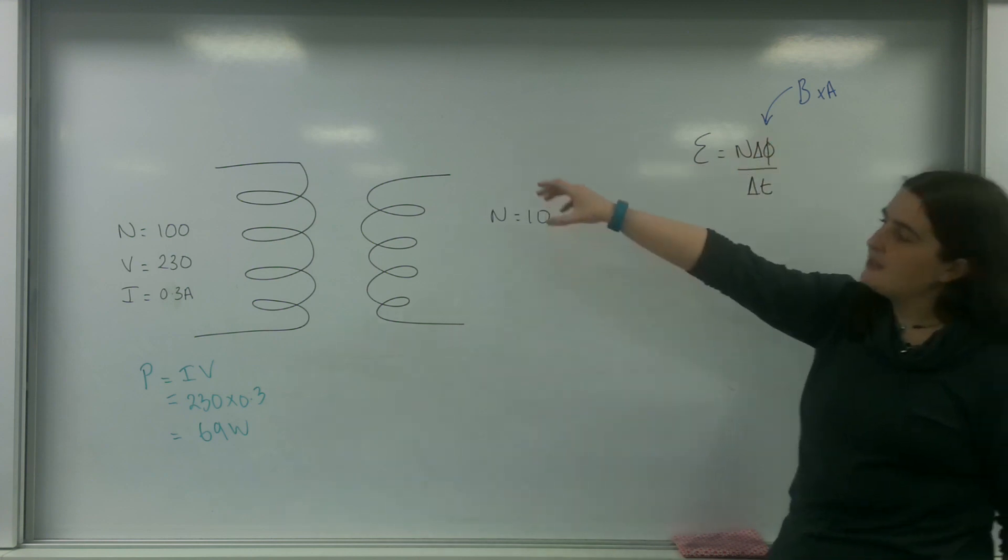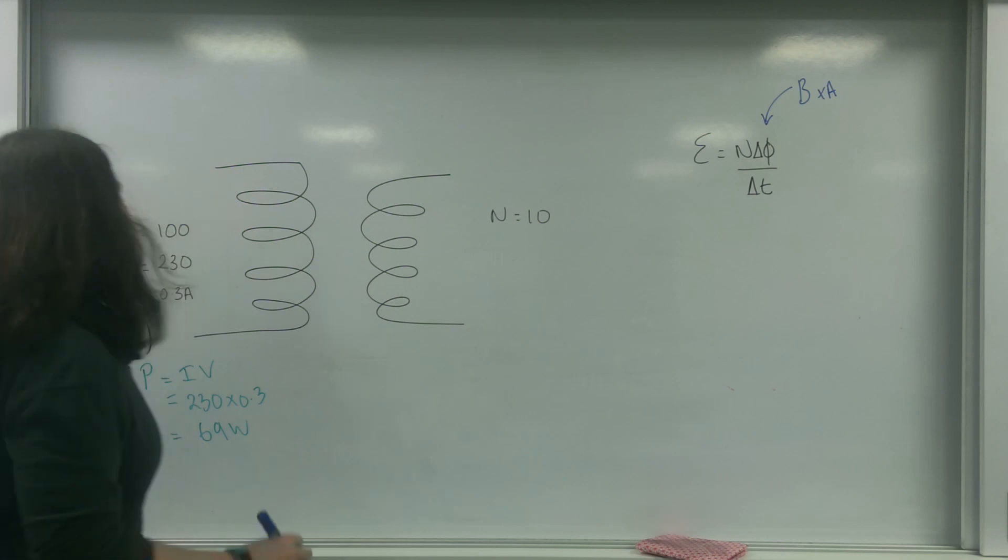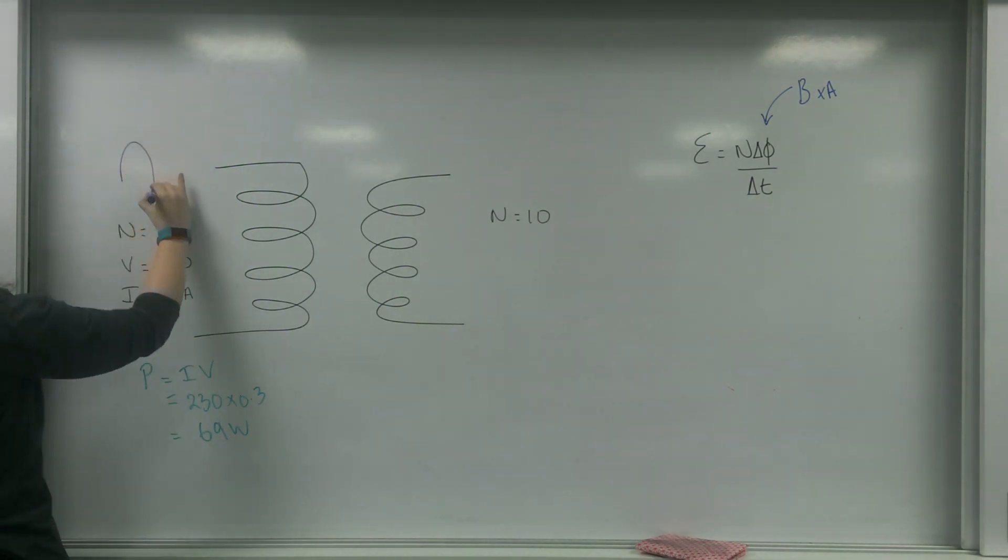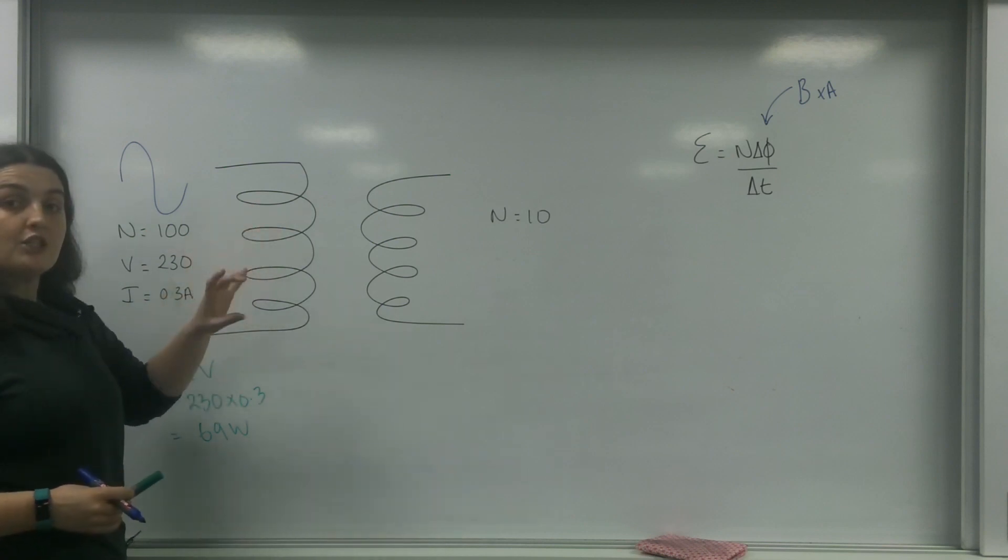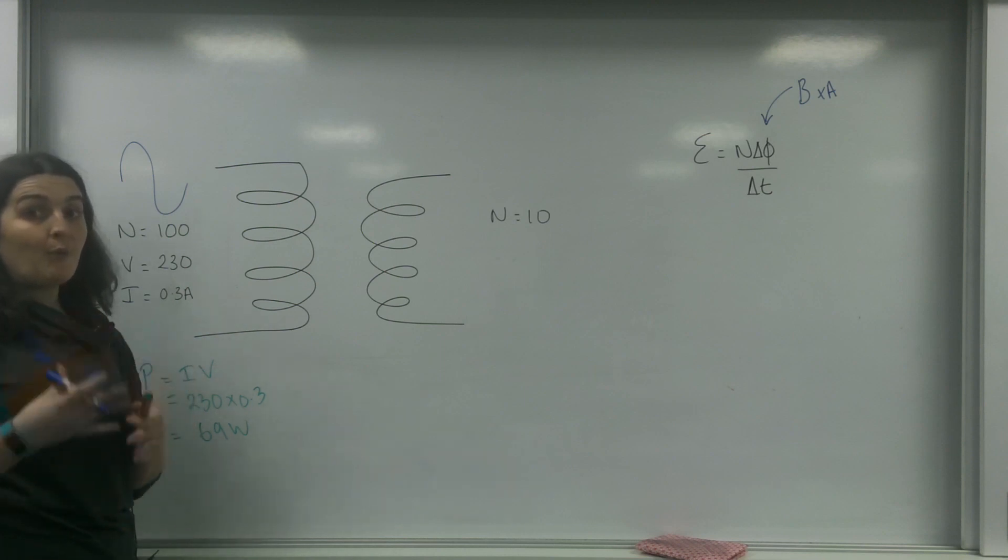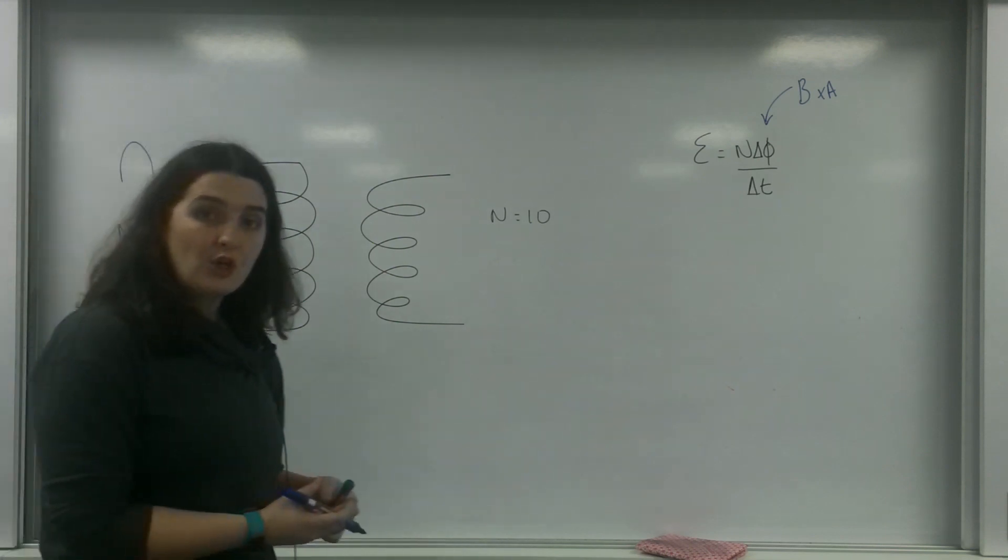So this is going to have an AC current going through it. It's going to have a current that looks like this. The reason it's going to be AC is because the current keeps changing direction, which means because it is a current carrying wire generating a magnetic field, the magnetic field continuously changes too.